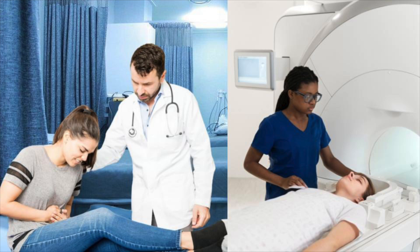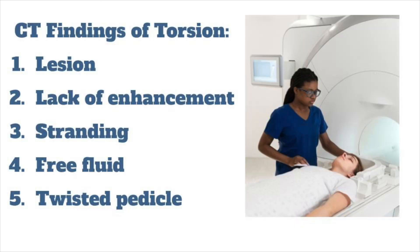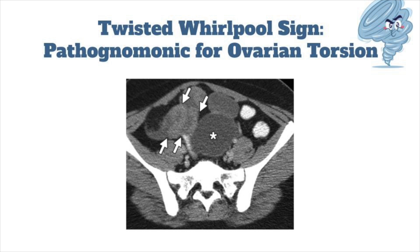What about CT in the female patient with lower quadrant pain? CT with IV contrast can suggest torsion. Similar to ultrasound, the most common finding is an enlarged ovary. If this is found on CT and no other pathology is present, move to ultrasound. Other CT findings that suggest torsion include an underlying ovarian lesion, lack of ovary enhancement with IV contrast, inflammatory stranding around the ovary, pelvic free fluid surrounding the ovary, and twisting of the vascular pedicle — known as the whirlpool sign. While the whirlpool sign is essentially pathognomonic for torsion, it is rare.